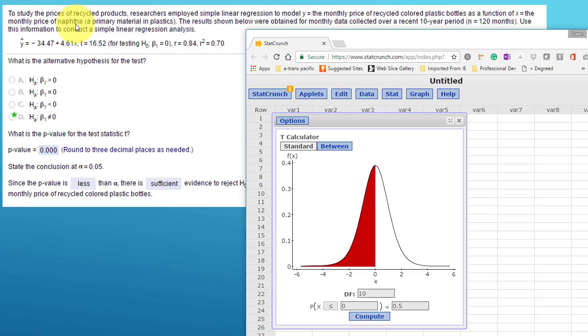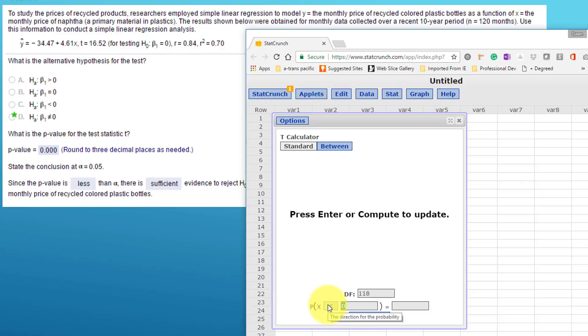Well, we've got an n value of 120 and we have two variables—the monthly price of colored plastic bottles and the monthly price of naphtha. So to get the degrees of freedom we subtract the number of variables, that would be 120 minus 2, which is 118. We'll put our t value in there, 16.52.